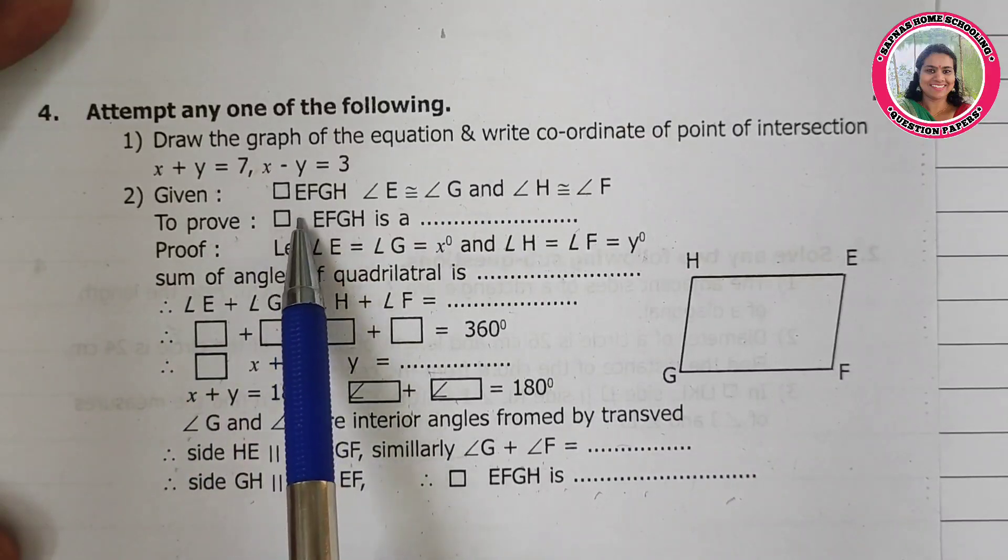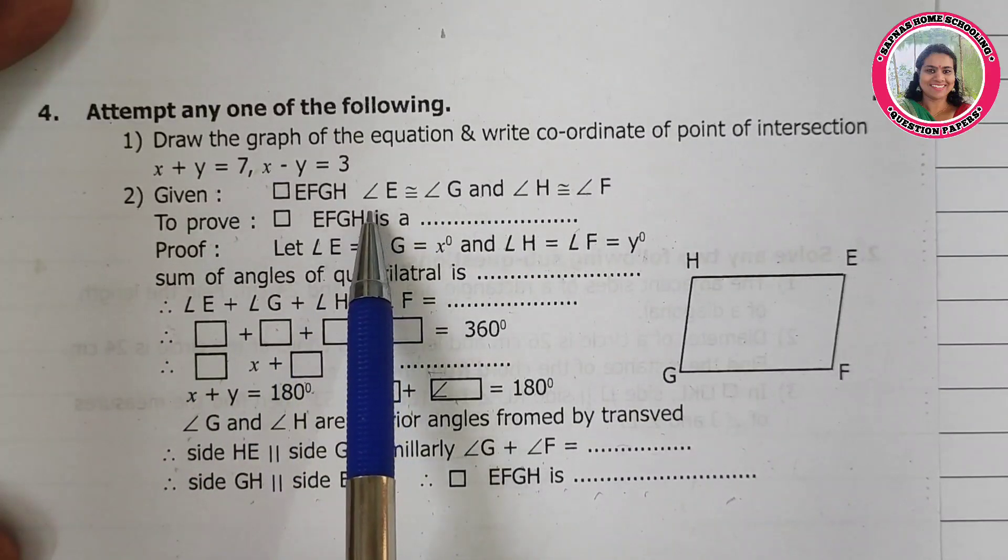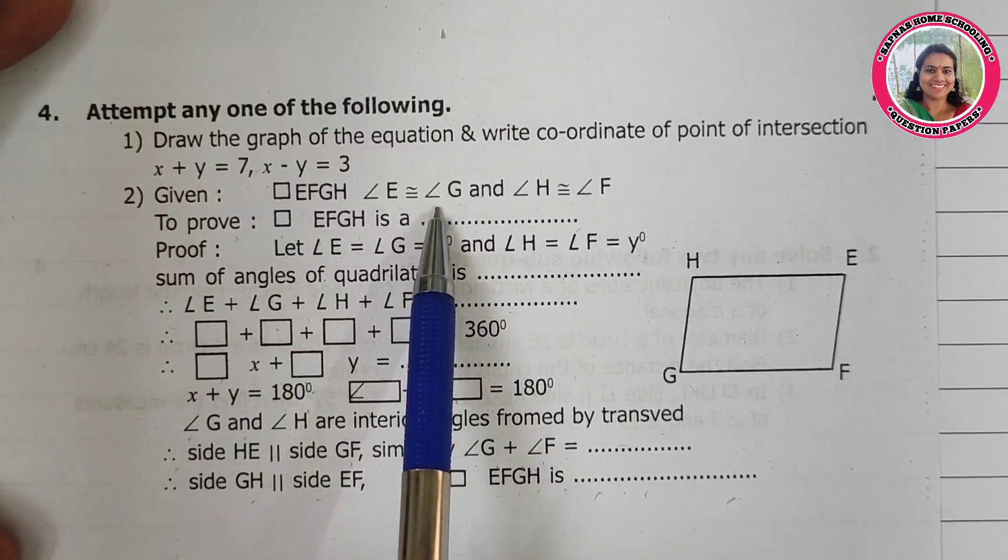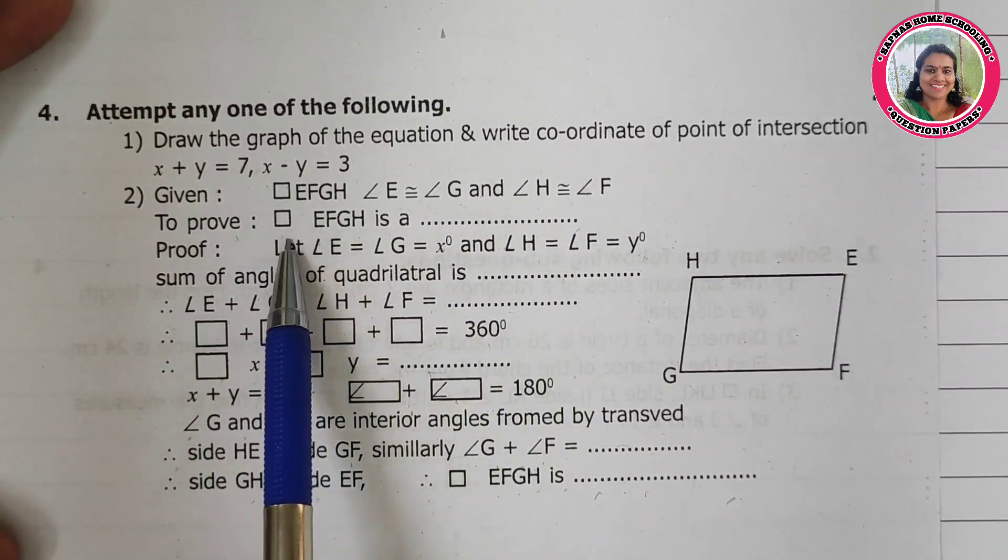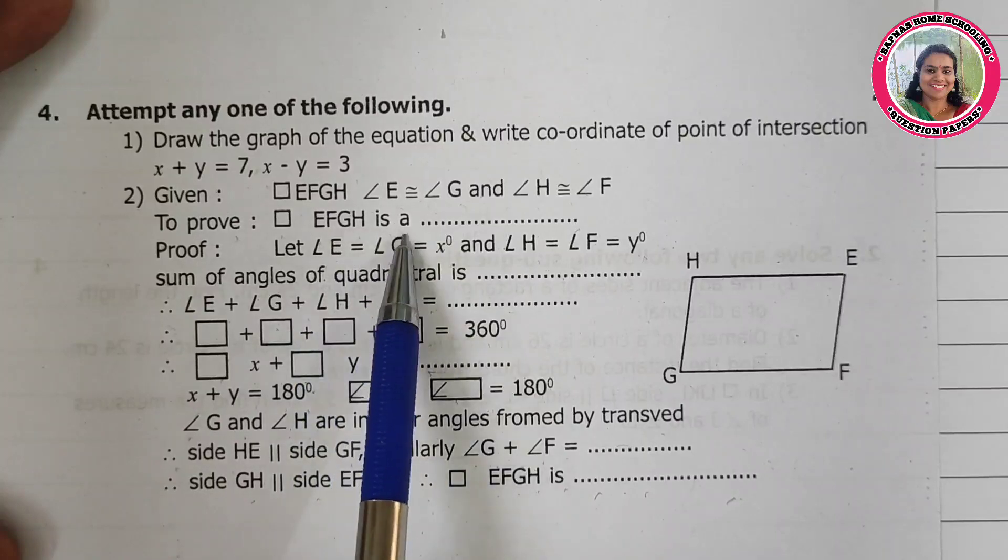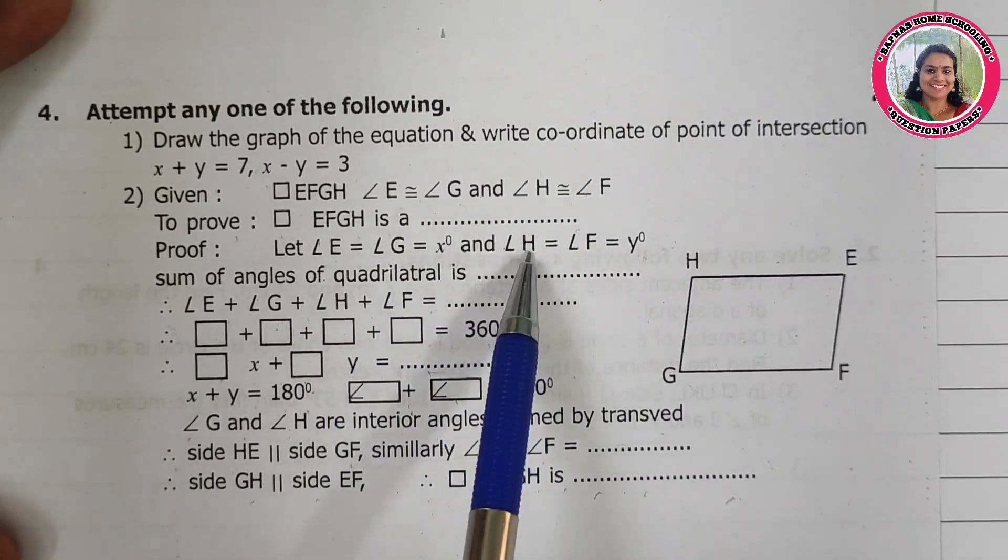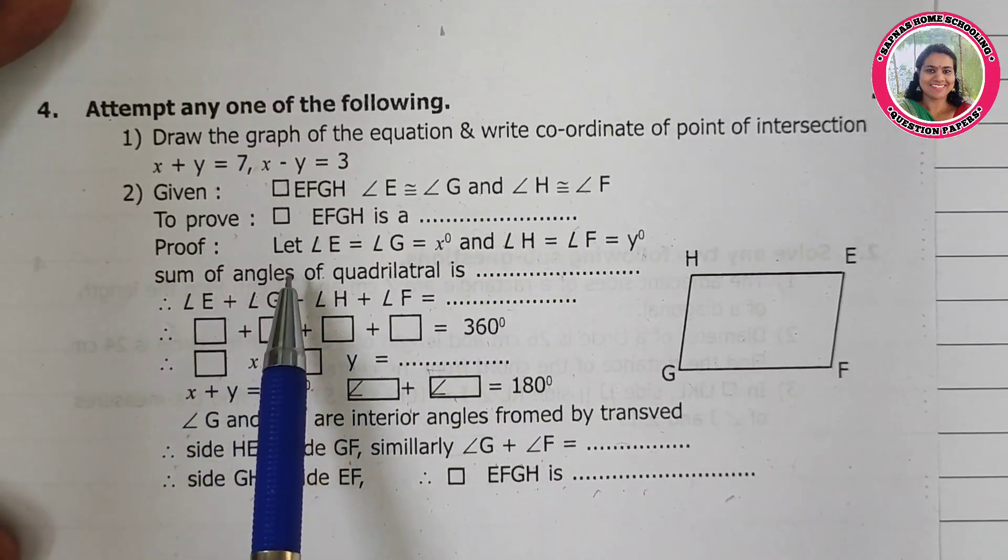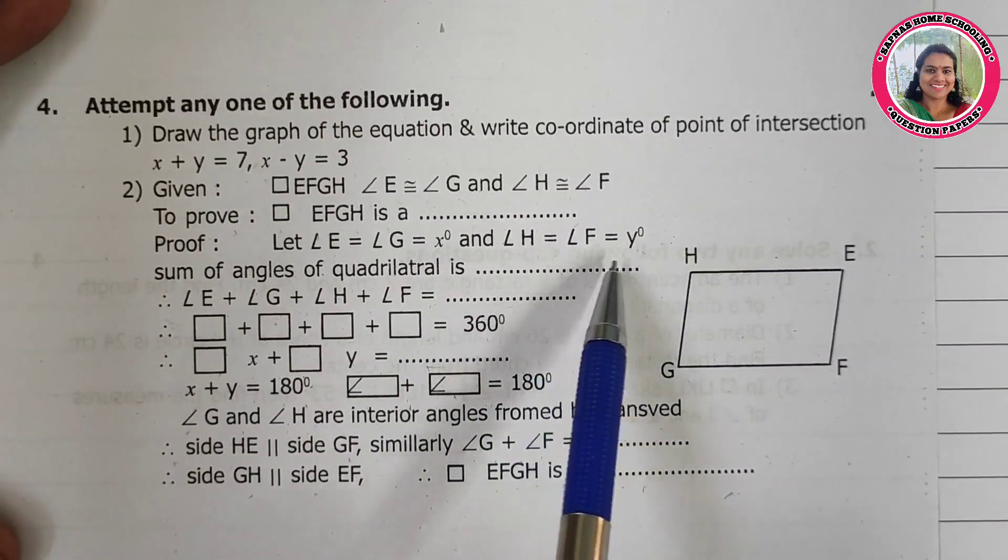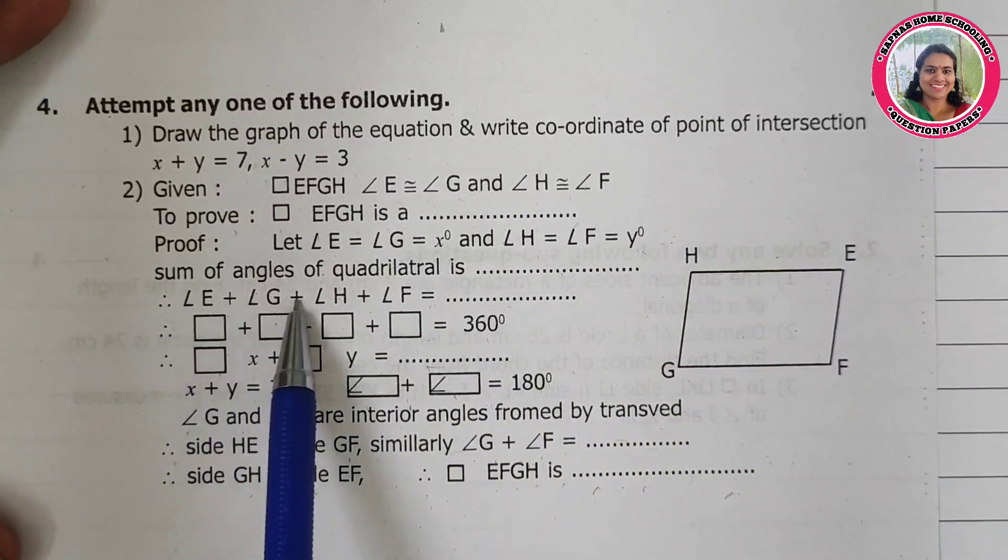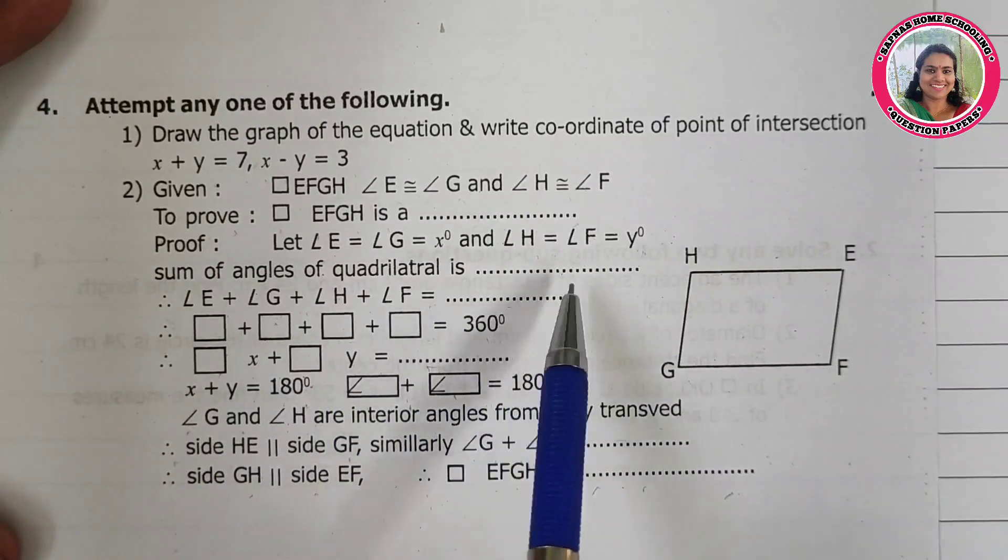Given quadrilateral EFGH, angle E is equal to angle G and angle H is equal to angle F. To prove: quadrilateral EFGH is a [fill in the blank]. Proof: Let angle E is equal to angle G is equal to x degrees and angle H is equal to angle F is equal to y degrees.